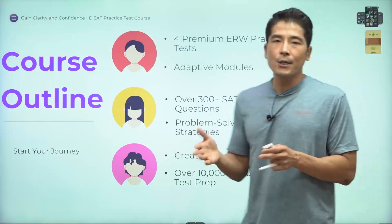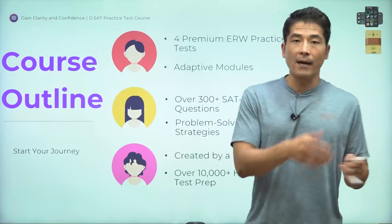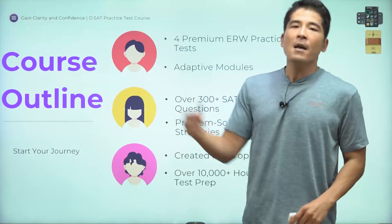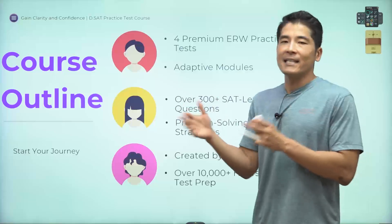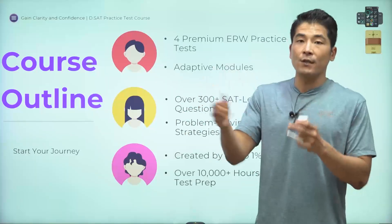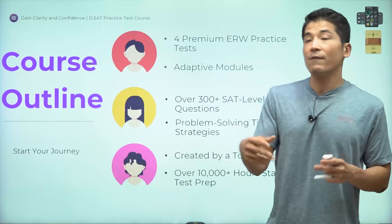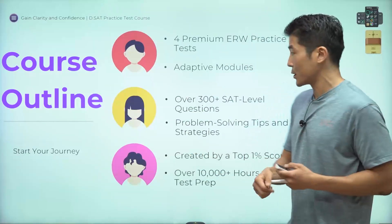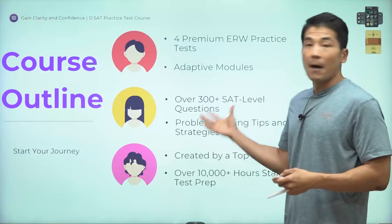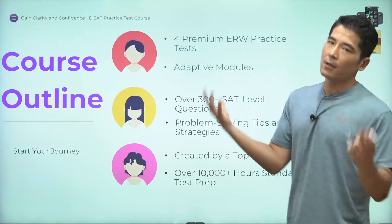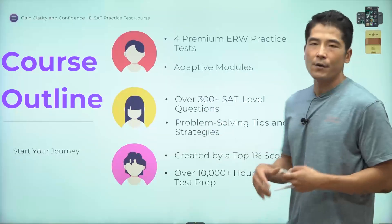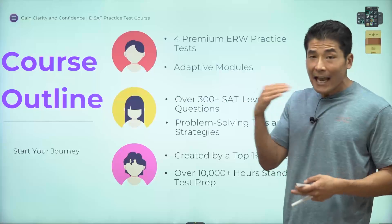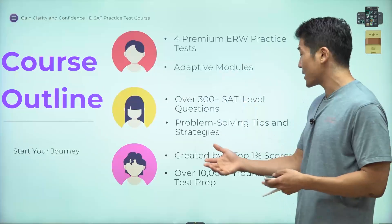In module one, if you get more than nine questions wrong, you're likely going to take the easy version for module two. If you get fewer than nine wrong, you'll jump into the hard version for module two. All in all, there are over 300 — about 320 — SAT level questions in this course.